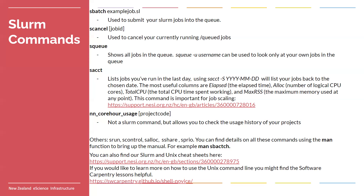The first of the important SLURM commands is `sbatch` — probably the most important. This is how you submit your jobs to the queue, to the scheduler. So you've made your plain text file — in this case called `examplejob.sl`. The extension doesn't matter; I tend to add `.sl` to my SLURM scripts just to make it easy to differentiate them, but you can call it whatever you want. The script contains what I mentioned: I want X amount of CPUs, Y amount of memory for Z amount of time, loading software A and running script B with software A. You submit that to the scheduler, it goes into the queue, et cetera.